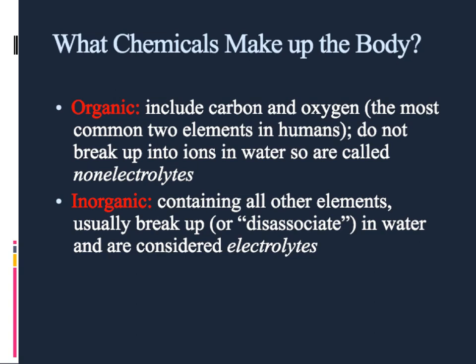All the other chemicals in the body tend to be classified in one of two ways. They're either called organic, which means they include carbon and oxygen, or they are inorganic, which means they contain any of the other elements from the periodic table — though we're usually only dealing with about 12 different elements. A distinguishing feature is that organic molecules, when they dissolve in water, do not conduct electricity — that's called being non-electrolytes.